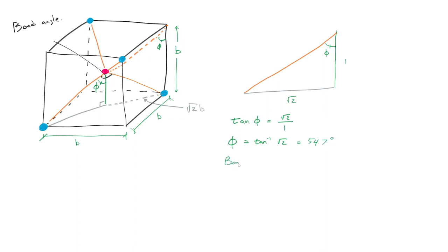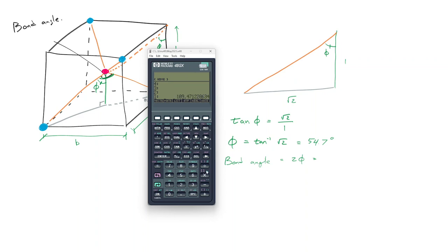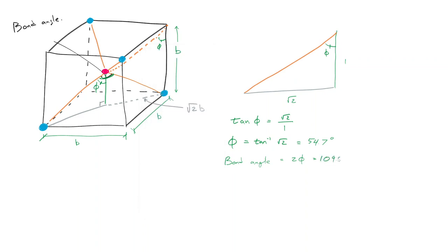Our bond angle is twice phi - that's what we said continues across. 2 phi equals 109.5 degrees.